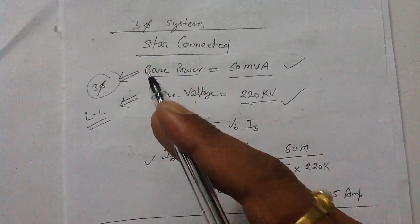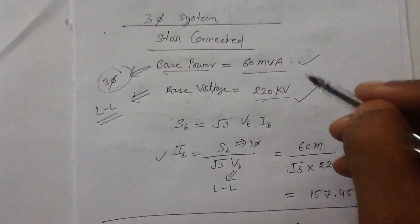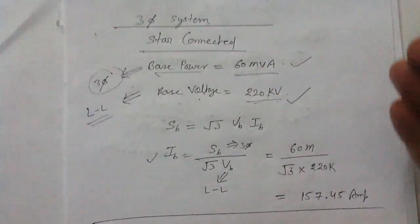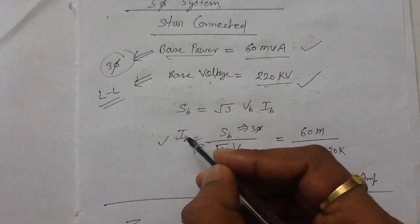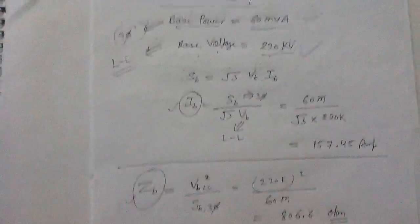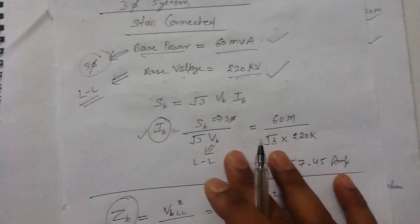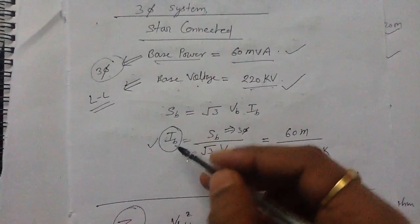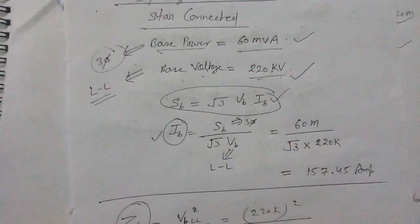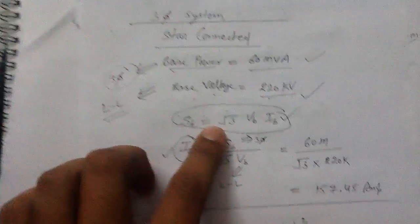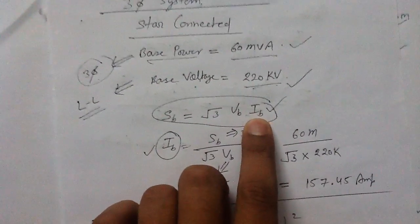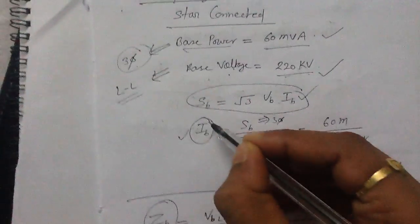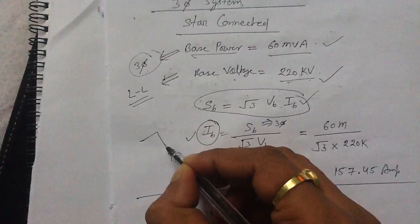Without converting the three-phase values to a single-phase basis, how can we directly find out the value of the base current and the base impedance? To get the value of the base current, remember we can use this formula directly. This formula can be used to find out the base current in the star-connected system directly.